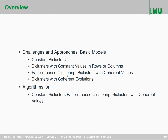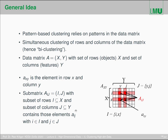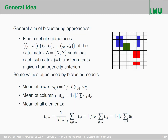We have four different patterns that those elements could follow, and we'll look at all of them. As mentioned, we try to find a set of sub-matrices of the original data matrix such that each sub-matrix meets a given cluster criterion — typically a kind of homogeneity criterion.